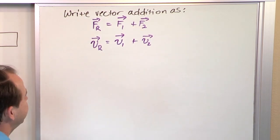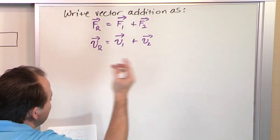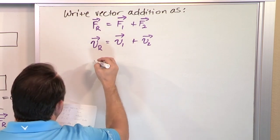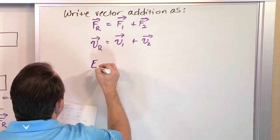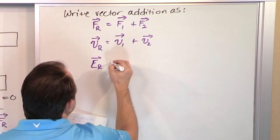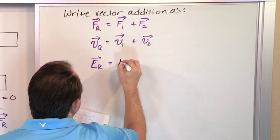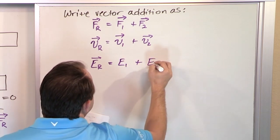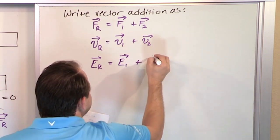And then just as another example, I've kind of thrown around electric field. The resultant electric field might be the sum of two different electric fields, E1 plus E2. But they're both vectors, so they add together.